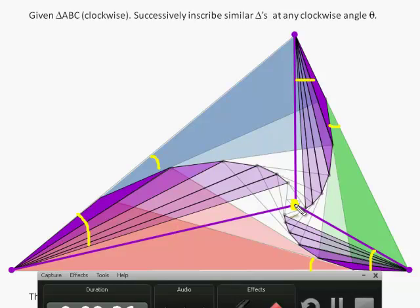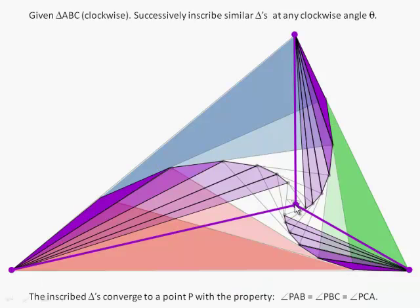If you successively inscribe triangles it doesn't matter you can do a higgledy-piggledy at any rotation angle whatsoever and you'll still end up at this point P. You can't get away from it. The inscribed triangles will always converge to the Brocard point.